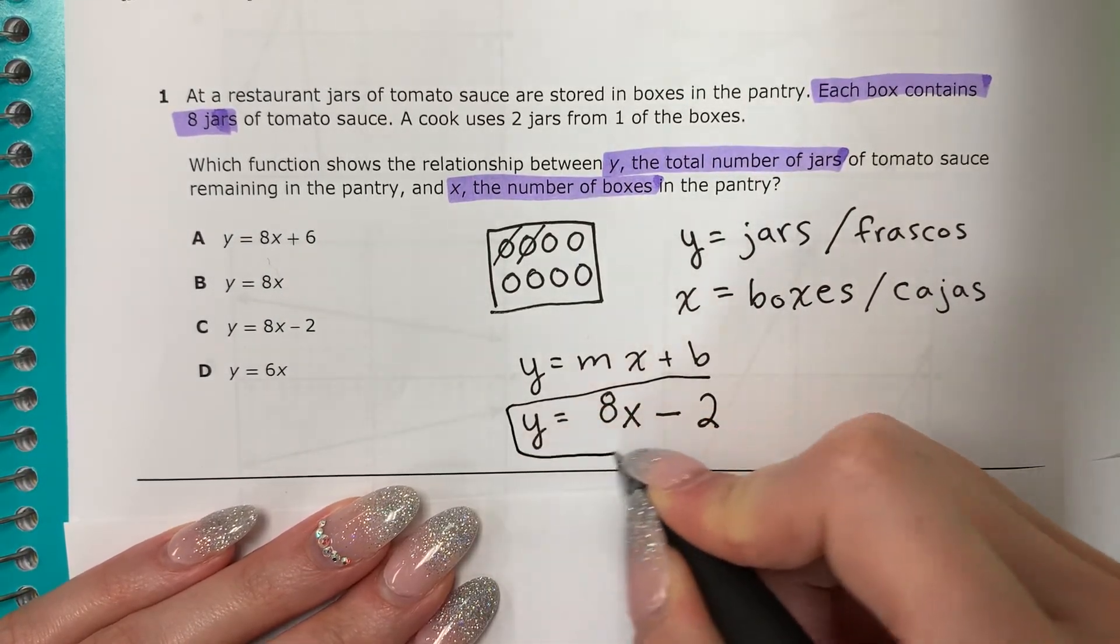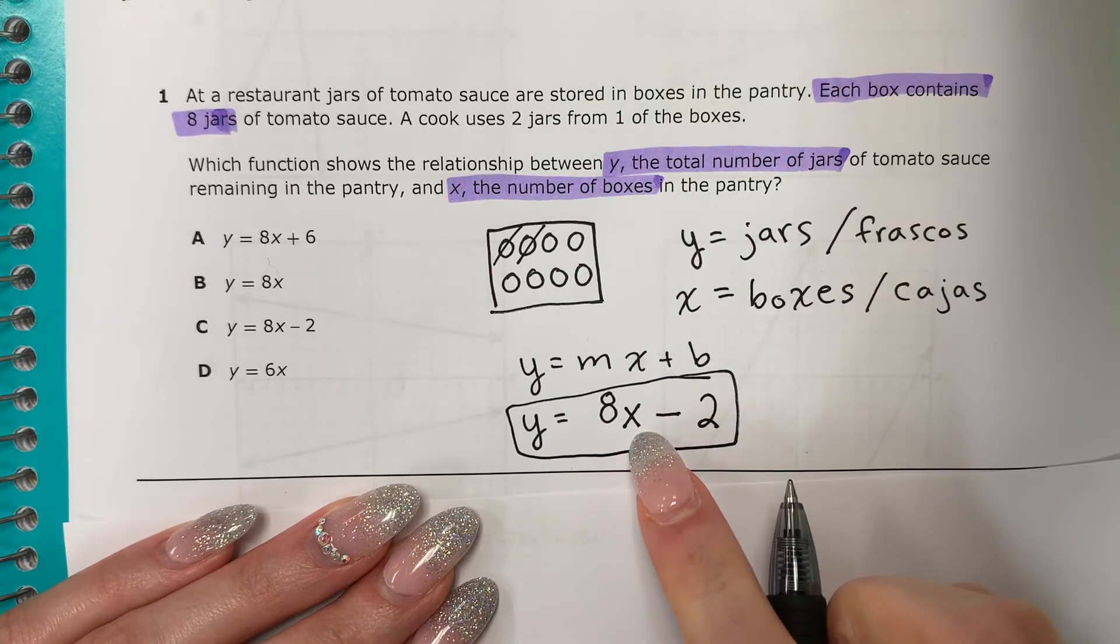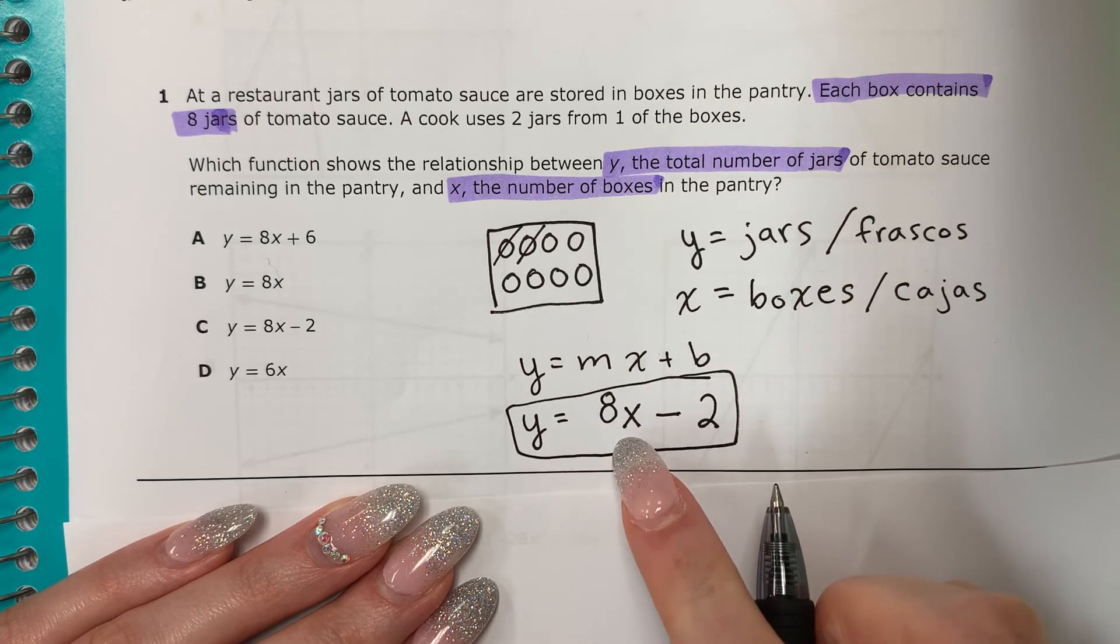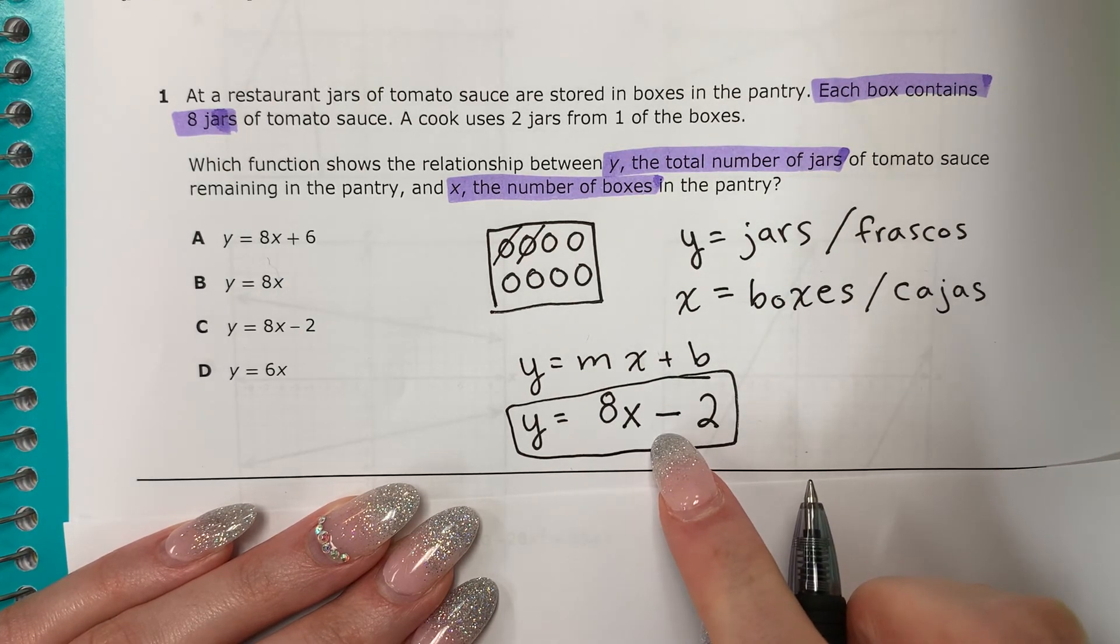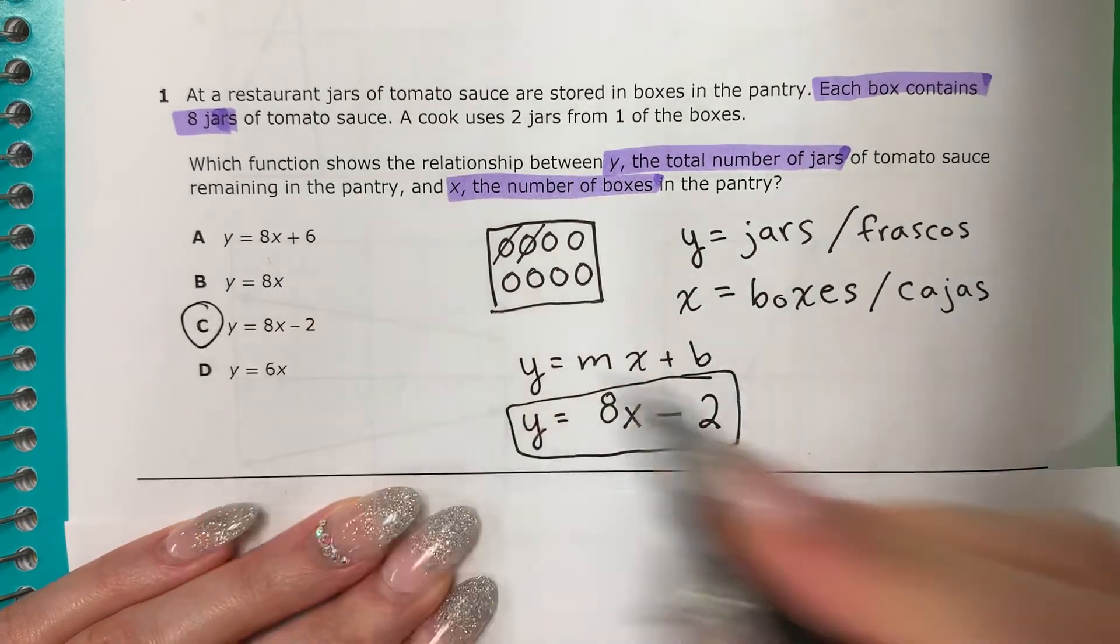And there is your answer. So there are 8 jars in each box and I used 2. Hay 8 frascos en cada caja. Y el cocinero usa 2. That's what this means. So your answer would be... Thank you.